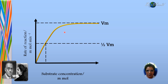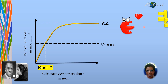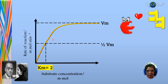Let me use the Michaelis-Menten curve to explain the significance of Km values. In this curve, let's say the Km value is 2. What this means is that for my enzyme to work efficiently, I will have to provide around 2 millimoles of substrate, and the enzyme will be able to carry out the reaction.